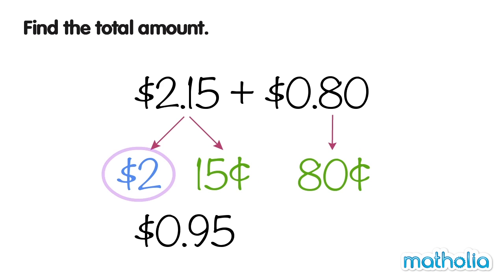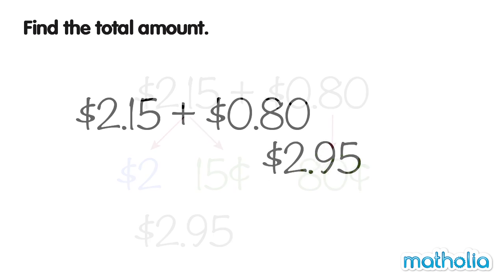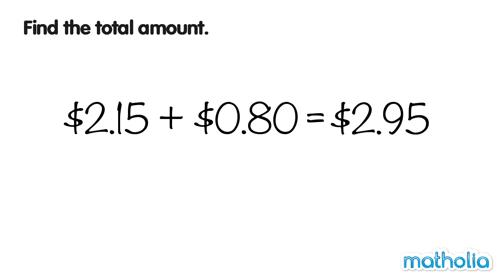Now add the dollars to $0.95. $2 plus $0.95 equals $2.95. So $2.15 plus $0.80 equals $2.95.